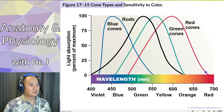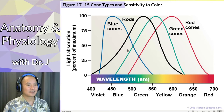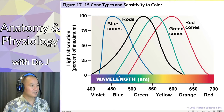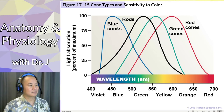Cones detect three different wavelengths of light. If you're into technology, you have red, green, and blue cones that specialize in detecting certain wavelengths of light. There is some overlap, but notice that the peak light absorption for the blue cones is at the blue wavelength, then green for the green cones, and red for the red cones.